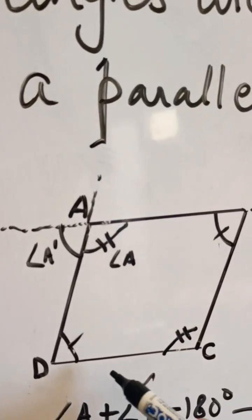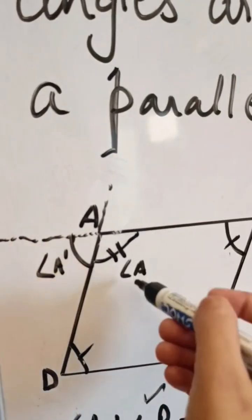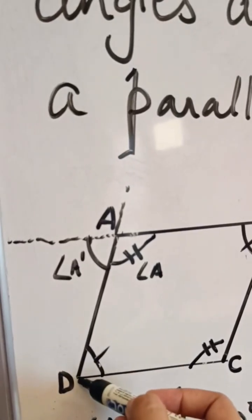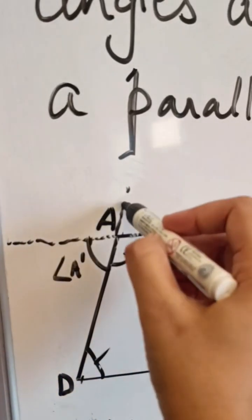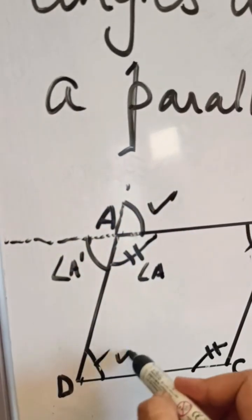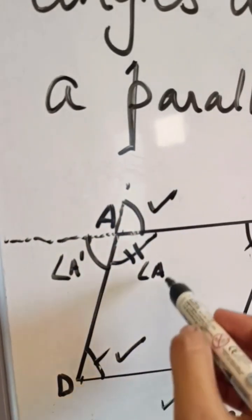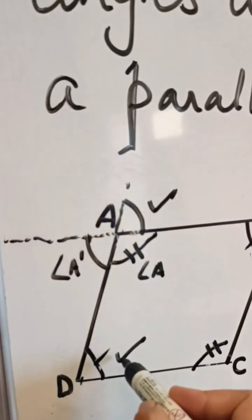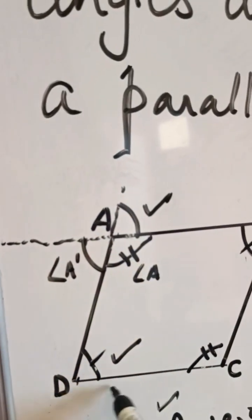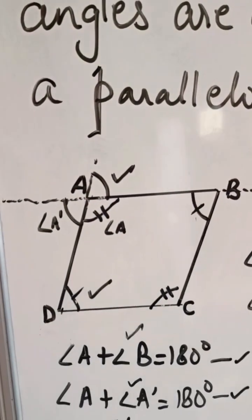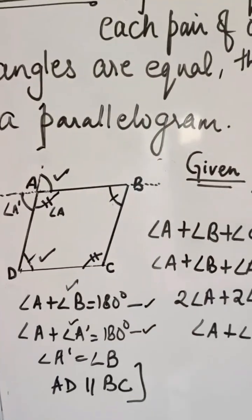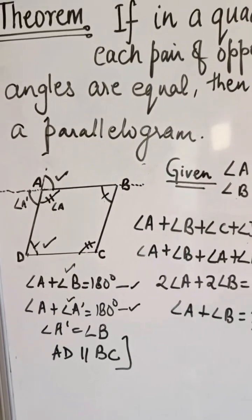Similarly, we can take angle A and angle D. The sum of angle A and angle D equals 180 degrees, and we can prove that the corresponding angle pairs are equal. Hence, we can say AB is parallel to DC. That means ABCD is a quadrilateral where opposite angles are equal and both pairs of opposite sides are parallel, making it a parallelogram.